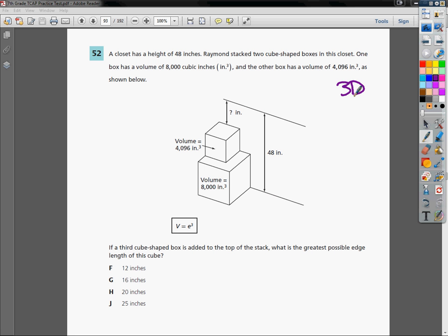Now, the closet has a height of 48 inches. So I'm going to note to myself that the whole thing is 48 inches long. That's what I'm going to base my question off of. Raymond stacked two cube-shaped boxes in the closet. One box has a volume of 8,000 cubic inches, and the other box has a volume of 4,096 cubic inches, as shown below.